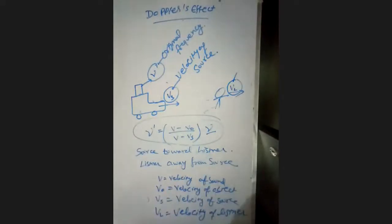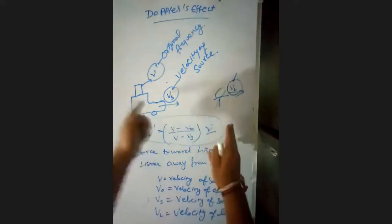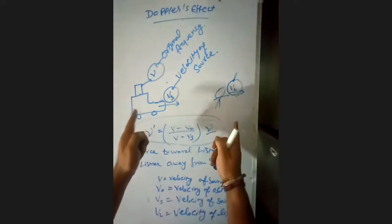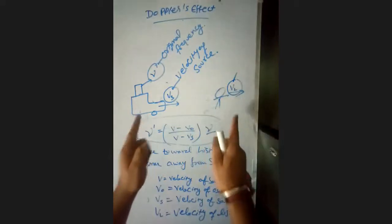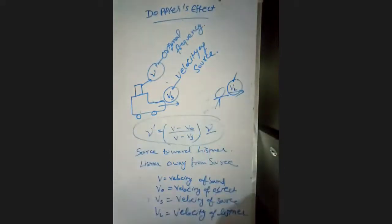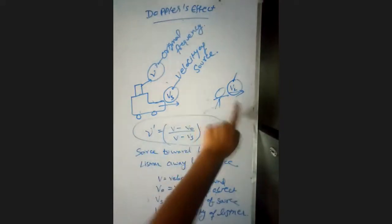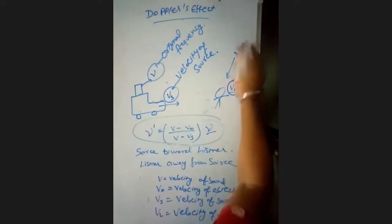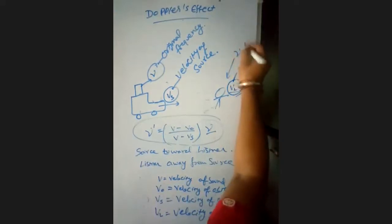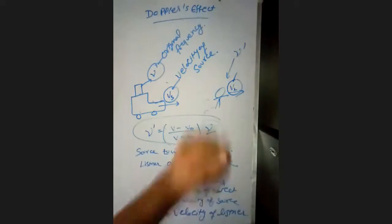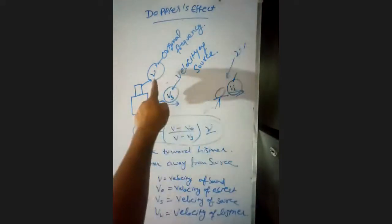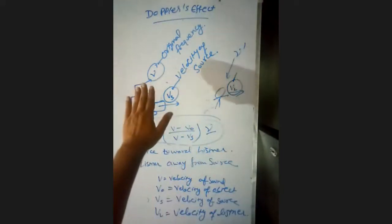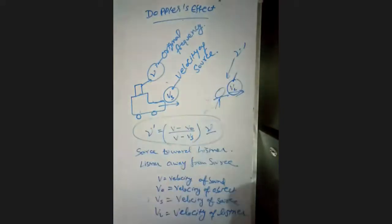Doppler stated that when there is a relative motion between the source and the listener, then the apparent frequency — that means the frequency that the listener will hear, denoted as ν' (nu dash) — will be different from the original frequency ν. So the original frequency and the apparent frequency will have different values.